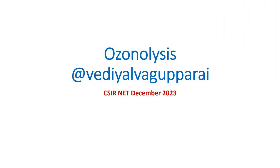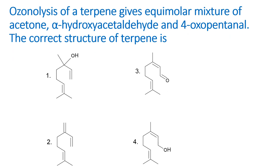Hello, welcome to Vedial Vagaparai. In this video we are going to see an ozonolysis question based on the CSIR NET December 2023 exam. The question states: ozonolysis of a terpene gives an equimolar mixture of acetone, alpha-hydroxyacetaldehyde, and 4-oxopentanol. The correct structure of the terpene is to be identified from four given structures.